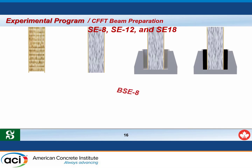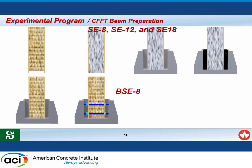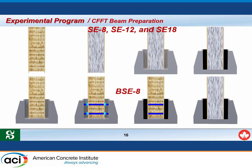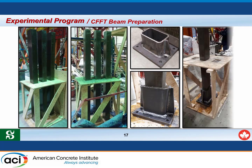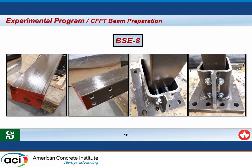For specimen number four, the bolted specimen, holes were made at the same level on both the CFFT tube and the steel connection. Anchors are then inserted through the steel connection and the FRP tube, the gap is filled with epoxy grout, and finally the tube is filled with concrete. Real photos show the preparation steps: closing the bottom end of the tube, making the holes in the FRP tube, passing the anchors through, and the result after anchor installation.